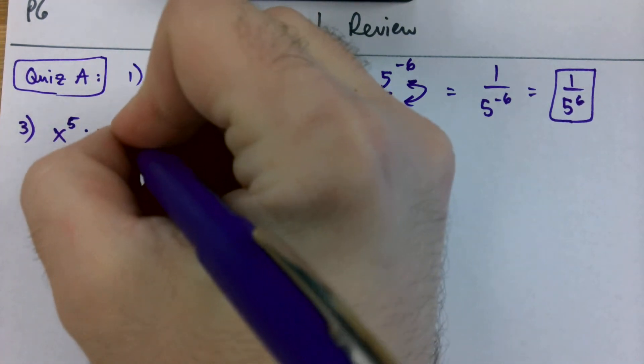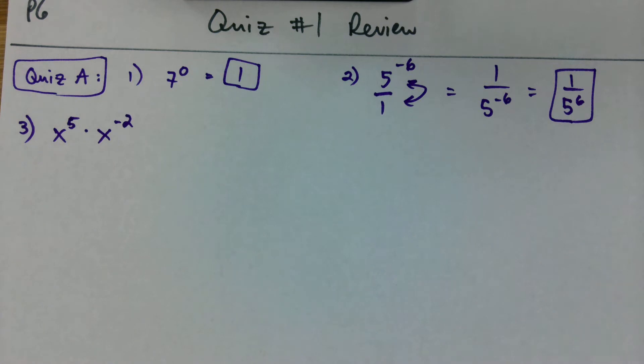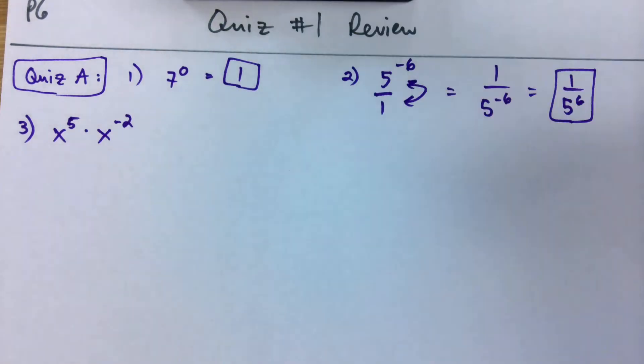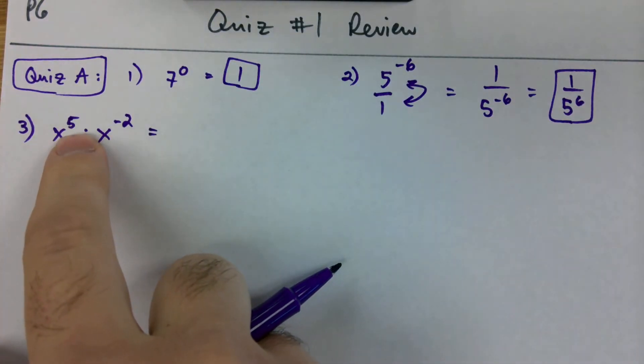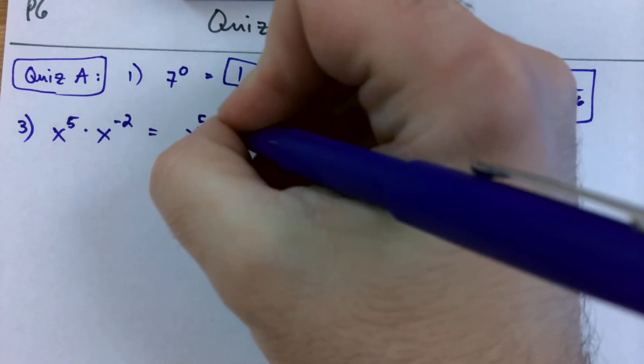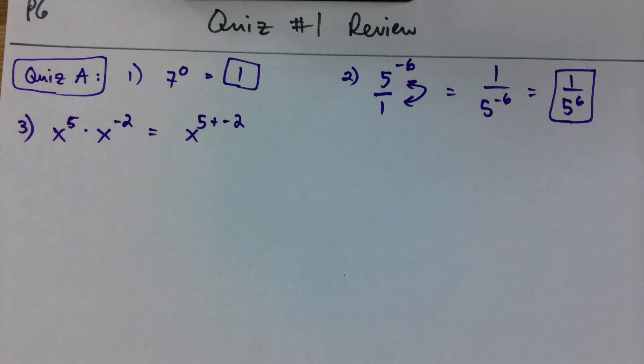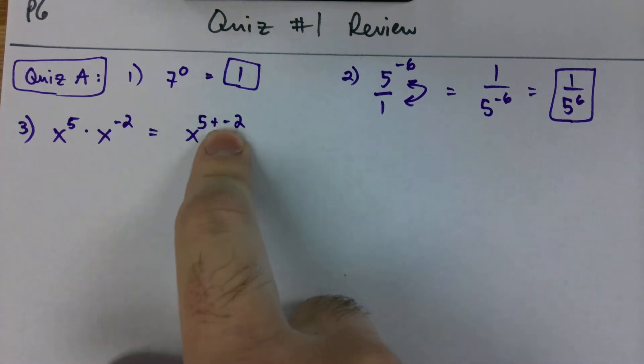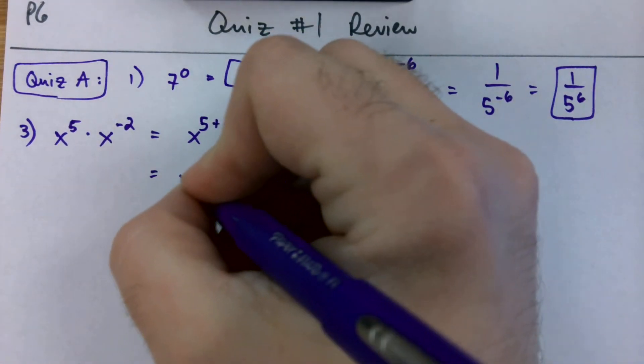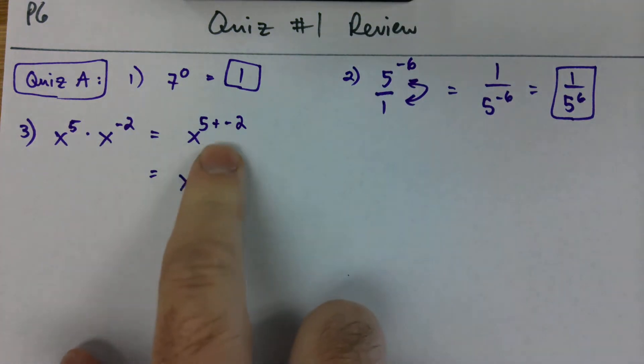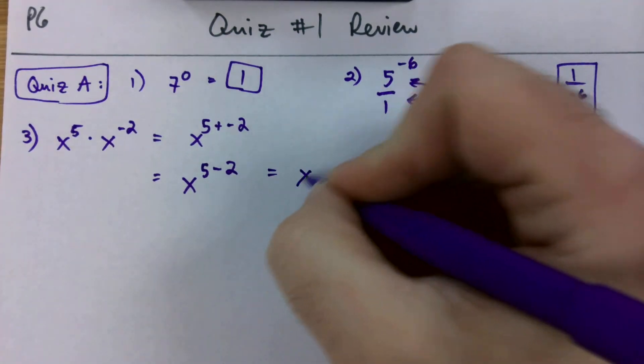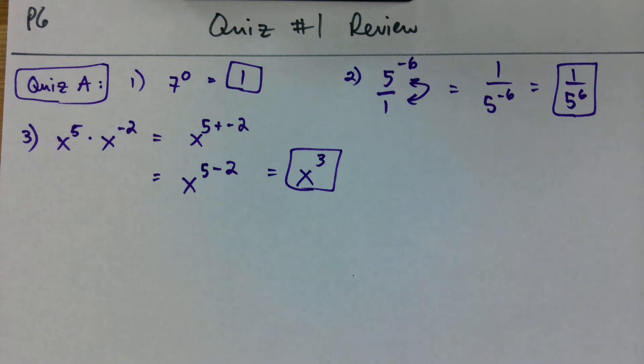Number three, we got x to the fifth times x to the negative two. Anyone know what rule we're going to use here in number three? Product rule. Thank you. Product rule is just when we're multiplying. So, when you see this little dot between the two bases, you know that you're going to use the product rule. So, when we multiply, all we have to do is add our exponents, five plus negative two. Make sure you keep that negative on the two because it's going to change what we do here. Five plus negative two is just five minus two. When we see a plus next to a minus, we can just write a minus. And that equals x to the third.